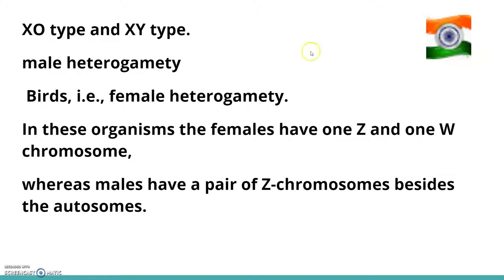There are two types of sex determination mechanisms: XO type and XY type. In both cases, males produce two different types of gametes — this is called male heterogamety. Males produce gametes either with or without an X chromosome, or some gametes with the X chromosome and some with the Y chromosome.